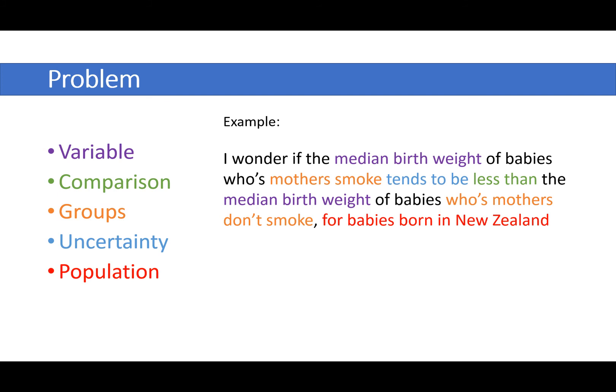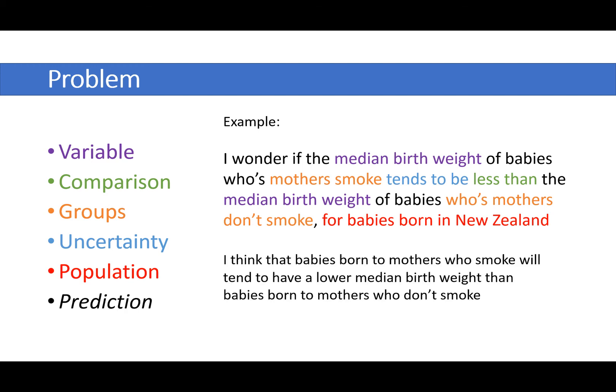Once you've set up your problem question, you also then need to make a prediction of which way you think this is going to go. So something like, I think that babies born to mothers who smoke will tend to have a lower median birth weight than babies born to mothers who don't smoke. So that's your basic achieved for the problem section. How could we go to expand that and get more than just achieved?